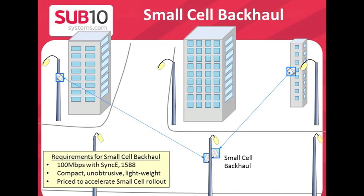This slide shows an example of a small cell backhaul deployment. An LTE small cell rollout will probably have small cells mounted on lampposts or on buildings, and in many cases fiber may not be available for the backhaul. The V100 is positioned as being very suitable for providing the backhaul for these small cells. The requirements of small cell backhaul are typically up to 100 megabit per second full duplex, synchronous Ethernet and 1588 support, very compact, unobtrusive and lightweight units, and a price point that gives small cells an attractive business case.